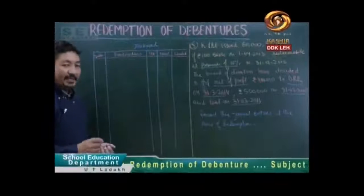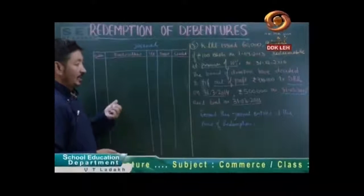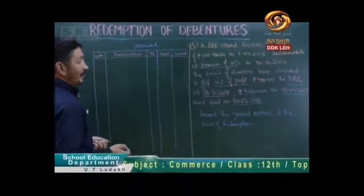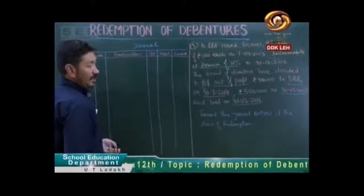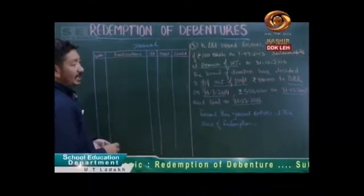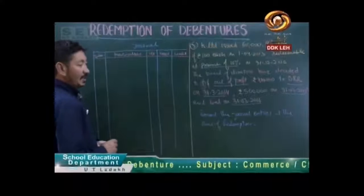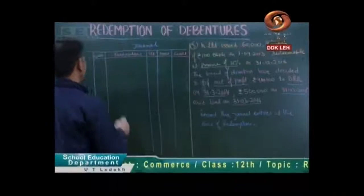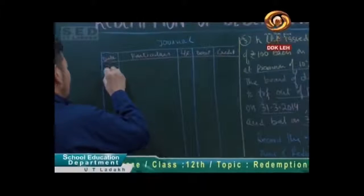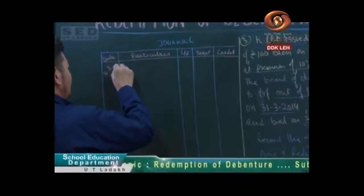Now what do we do? Redemption time — which entry we have to do here. First of all, our entry will be for the redemption going to be on 31 December 2016. First, the director decided to create Debenture Redemption Reserve for 4 lakhs. When to transfer? That is 31 March 2014. So here we have to record the entry on 31 March 2014. Here we will be transferring from Profit and Loss account debited to Debenture Redemption Reserve — 4 lakhs.